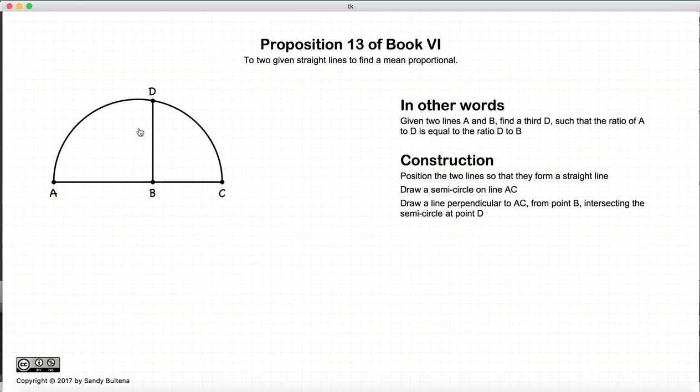We draw a perpendicular from the base AC and where it intersects the semicircle, we label point D. And now BD is our mean proportional to AB. In other words, AB to BD is equal to BD to BC.